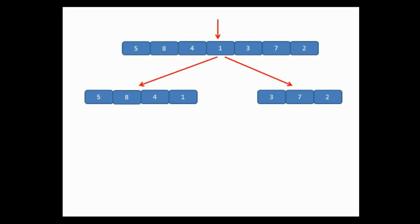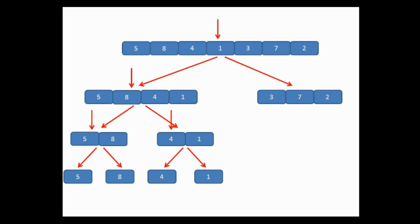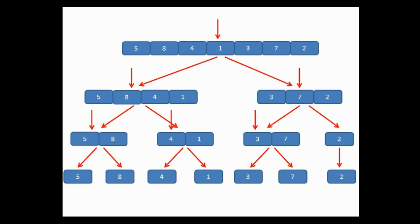Follow the same procedure to divide the list until only one element is left in each sublist. The sublist on the right side, 5, 8, 4, 1, is split into 5, 8 and 4, 1. Then 5, 8 divides into single elements, which is the exit condition. Similarly, 4 and 1 split into single elements. The second sublist, 3, 7, 2, divides into 3, 7 and 2. Then 3 and 7 split further, while 2 remains a single element.